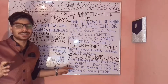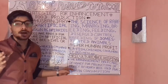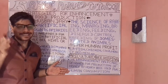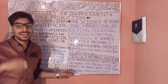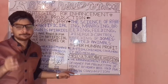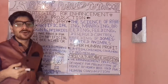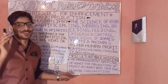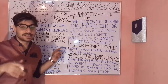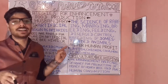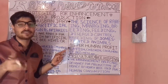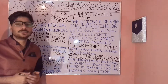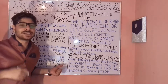Now let's understand apiculture. Apiculture is the management and care of honeybees for the production of honey for human beings. In this case, bees are reared and cultured in artificial movable hives, also called artificial movable boxes.